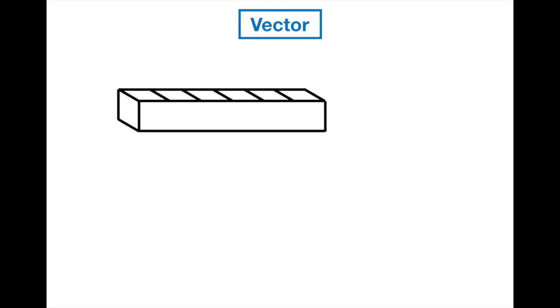Vector is pretty much resembled to array. For example, a vector is also adjacent memory blocks with indexes, and we can access each element by using its indexes.